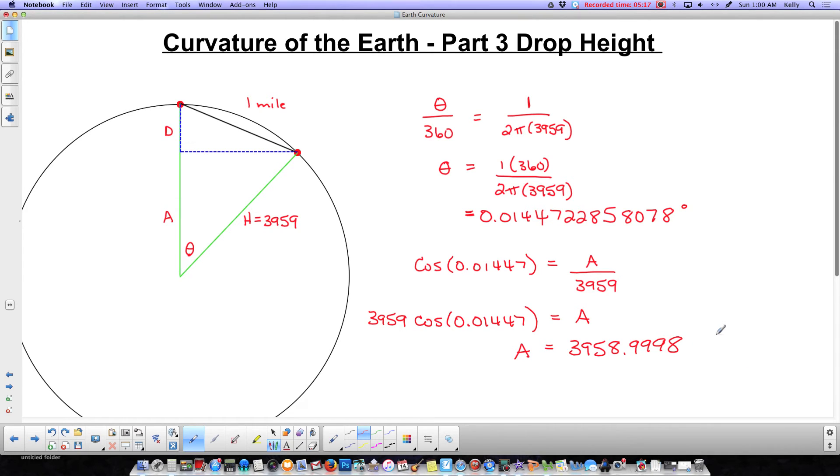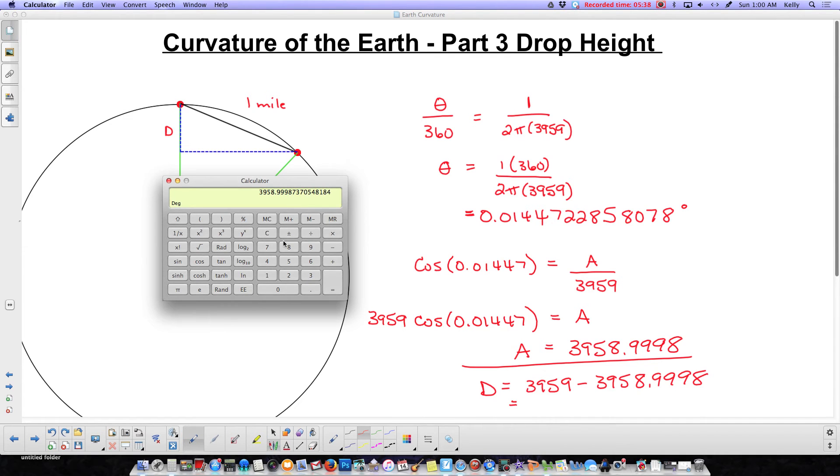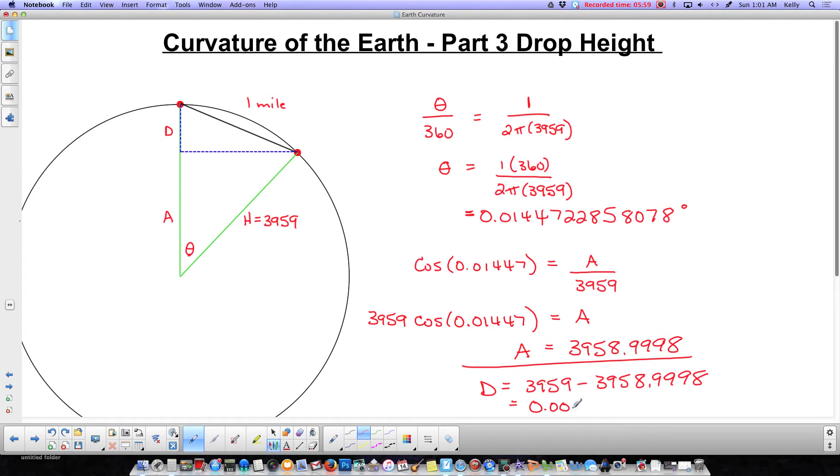But to find the drop height, I have to do the radius, 3959, subtract this number, 3958.9998, which is going to be pretty darn close to the radius. Now, I'm going to do this backwards because this calculator works better that way, so I'm just going to go minus 3959. It's going to give me a negative answer, but that's just because I subtracted the bigger number from the small number. I can just ignore the negative sign. So 0.00013.